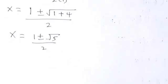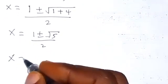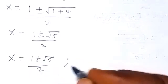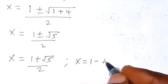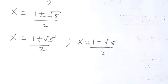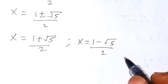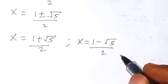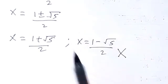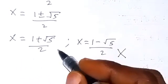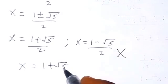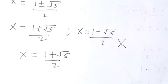We have two values of x: x equals (1 plus root 5)/2, or x equals (1 minus root 5)/2. The second value gives a negative answer, and when substituted into the original equation it does not satisfy it. Therefore the solution is x equals (1 plus root 5)/2 — only this one satisfies the given equation.